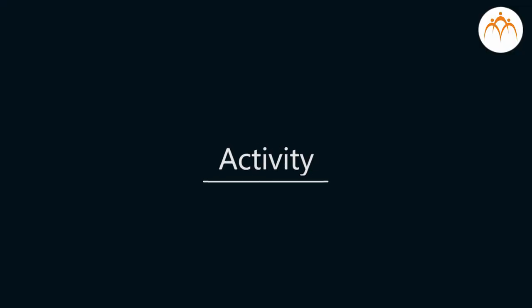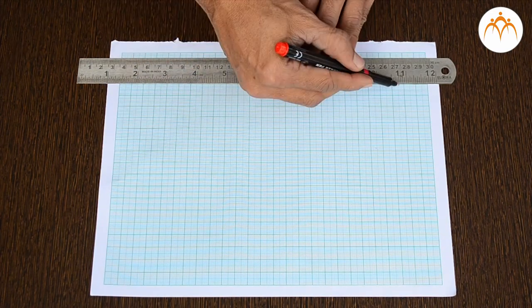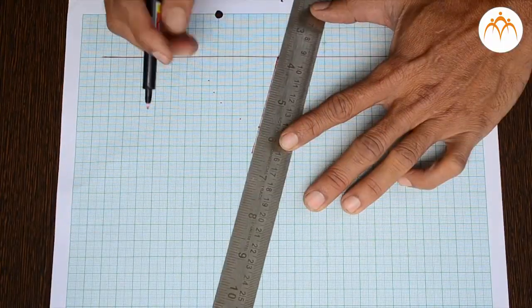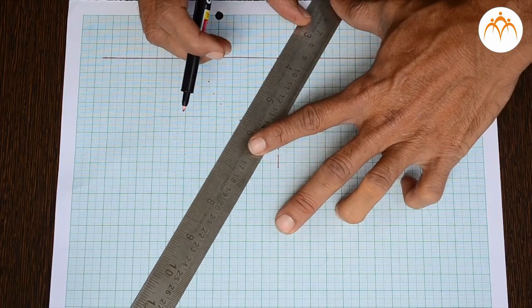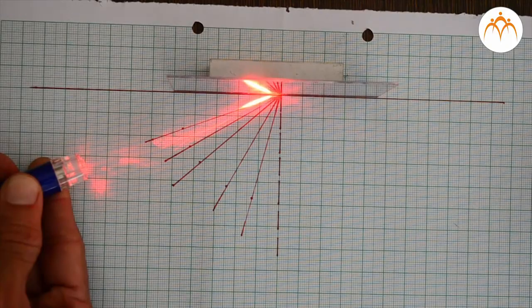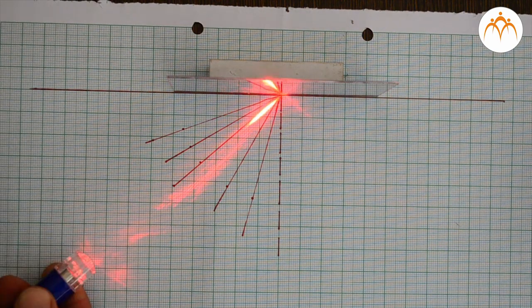Activity. With the help of graph paper, laser light, protractor, and glass mirror, verify the law of reflection. Consider at least five different angles for incident ray. Are your observations in line with the prediction?